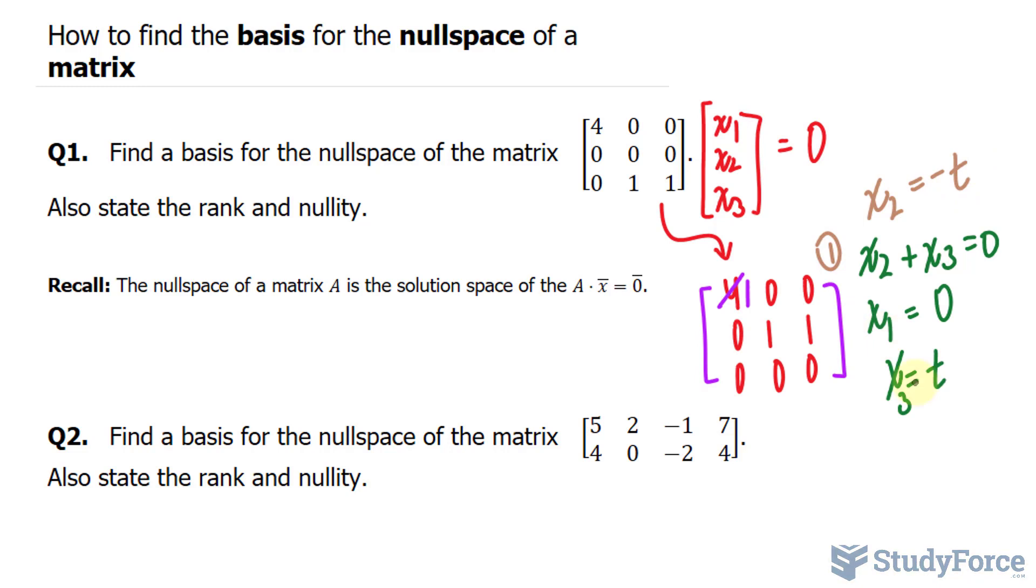As a result, we can write this all out neatly as the vector that represents the variables is equal to t times what t is equal to in the first equation. We have no presence of t in this equation, so we write down zero as the first element. X sub two, negative one, and x sub three, one. Therefore, this column right here is the basis for the null space of this matrix.